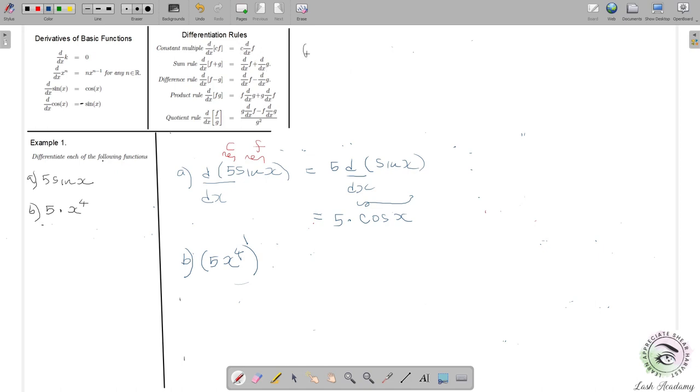We can pull out the constant. Let's write down the constant multiple rule in dash notation. The derivative of cf is equal to c times the derivative of f. By comparing, identify constant c to be 5, and the function f to be x to the 4.